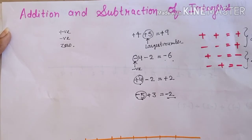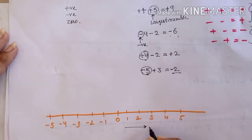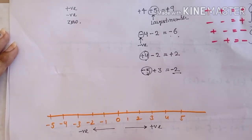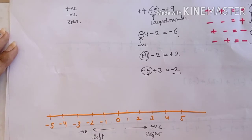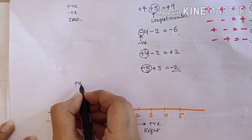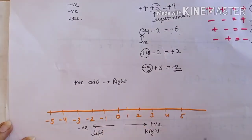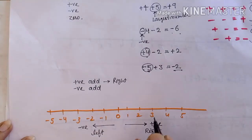Next, addition and subtraction को number line से कैसे show करेंगे। Right side पर positive numbers होते हैं और left side पर negative numbers होते हैं। अगर positive number add करना है तो right side move करेंगे। अगर negative number add करना है तो left side move करेंगे।